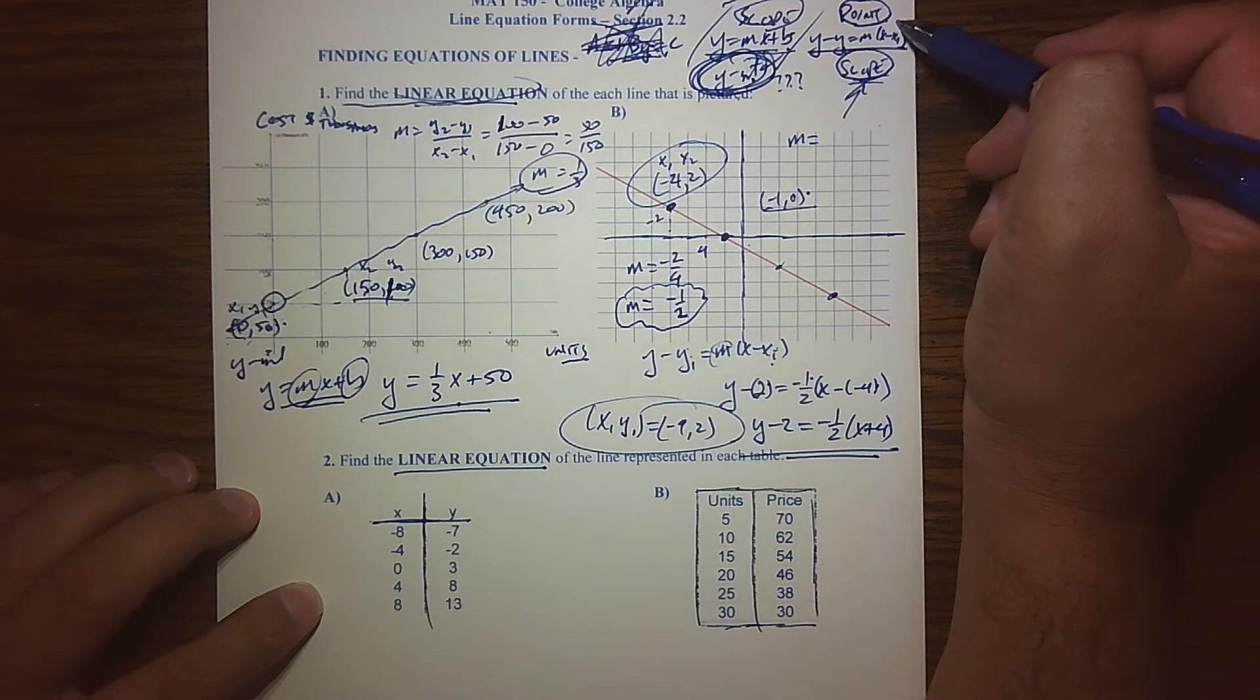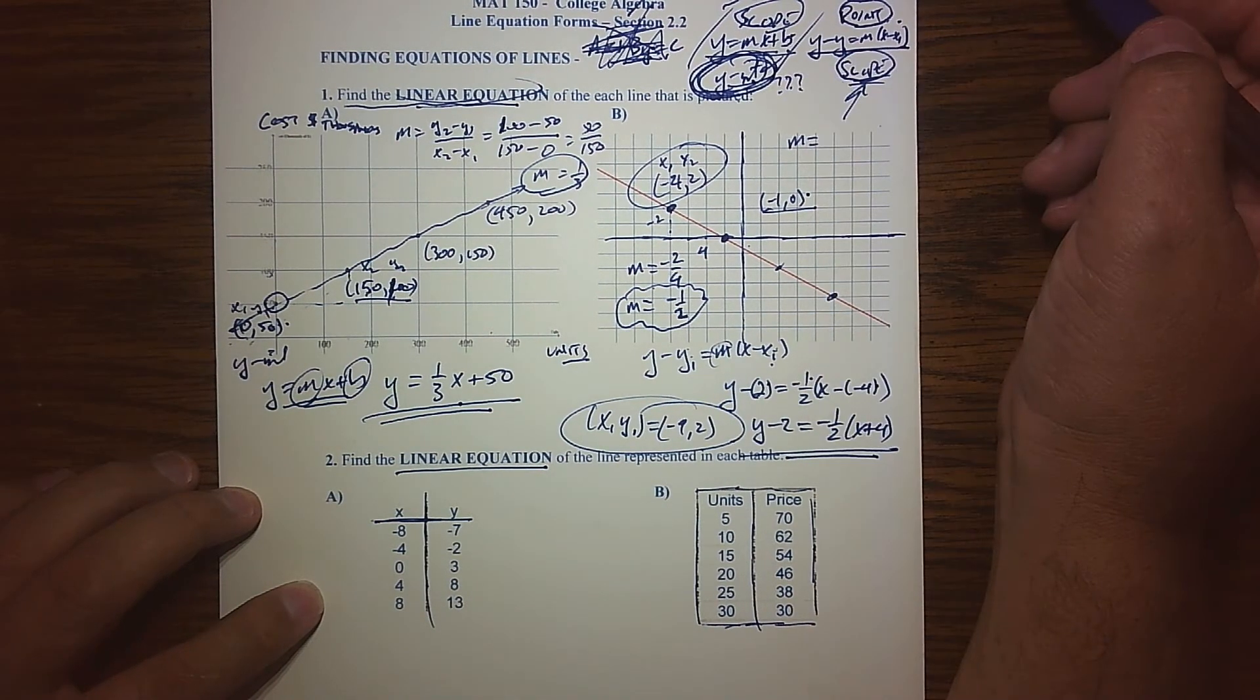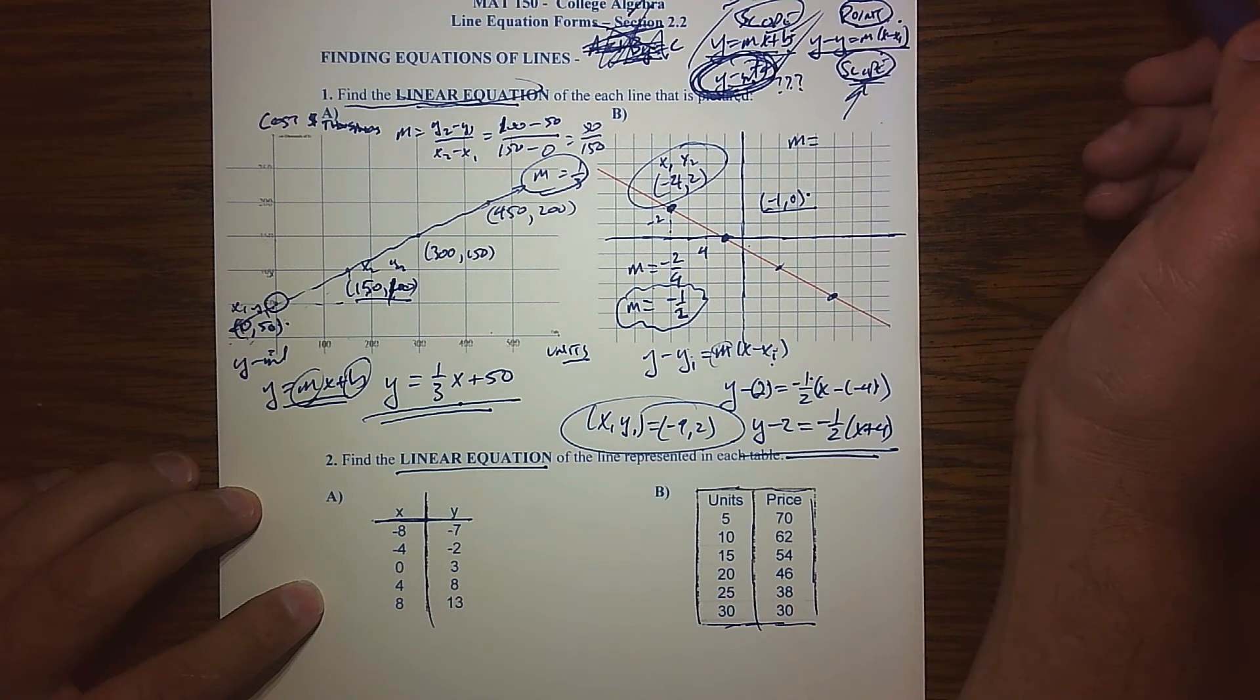We have the slope-intercept or point-slope form. And of course, it all derives: do I have the y-intercept or not? If I do, I'll stick with that guy. If I don't, I'm going to use that guy.